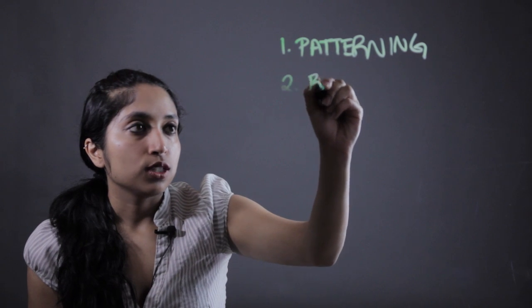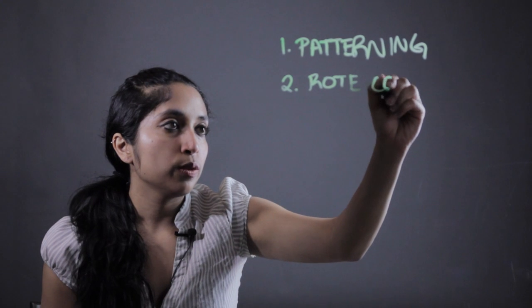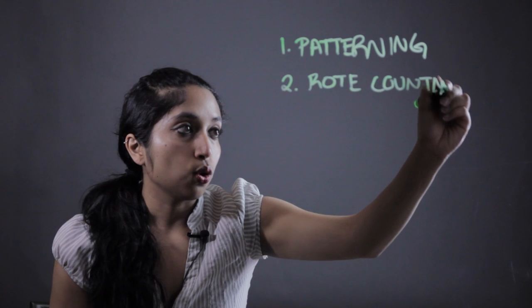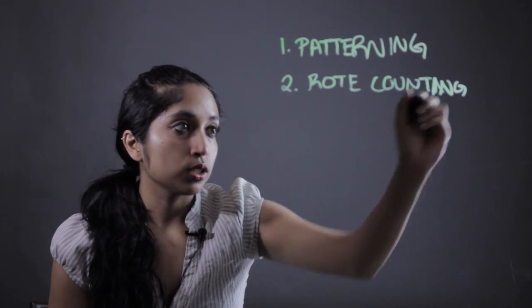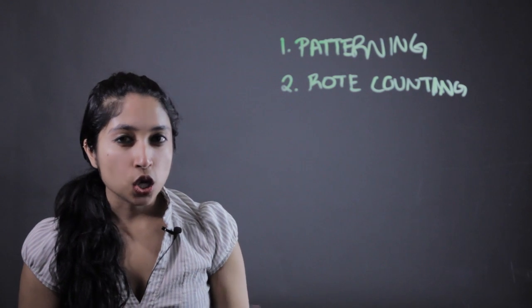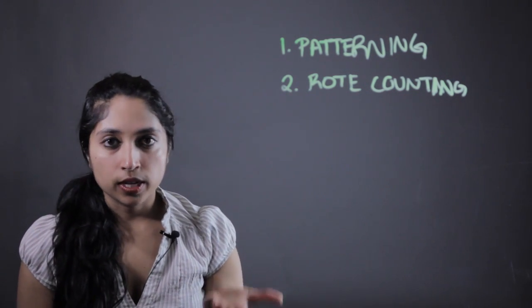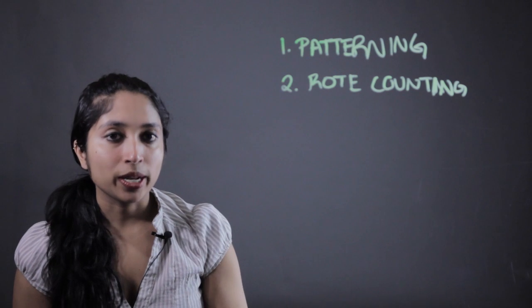Second thing is rote counting which is kind of a big word but all it means is learning the order and the names of the numbers without necessarily knowing what they are. So like one, two, three, four, learning all of that but not really knowing that maybe one is less than two or what one apple means.